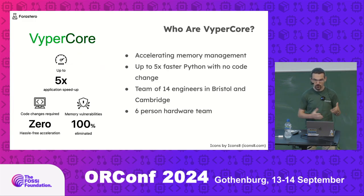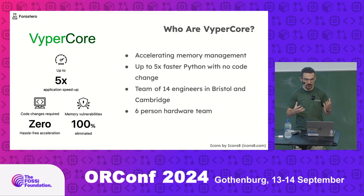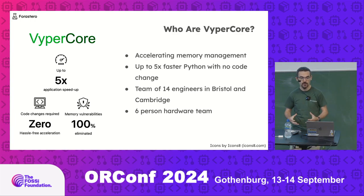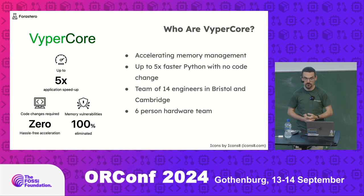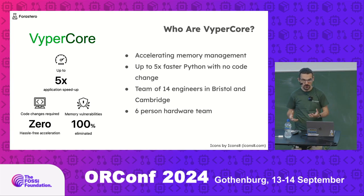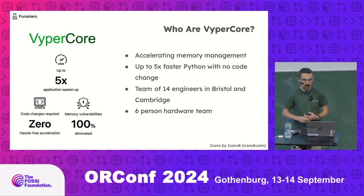Who are ViperCore? We are a company that's building accelerated memory management technology in hardware. We can offer up to five times faster Python with no code change. We're quite a small team at the moment — 14 engineers in Bristol and Cambridge, with a six-person hardware team.